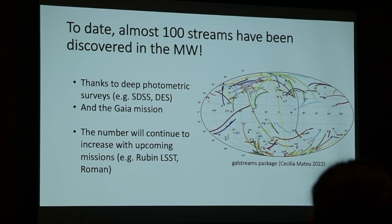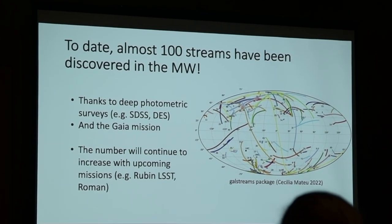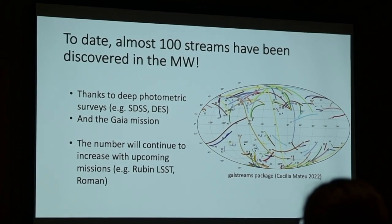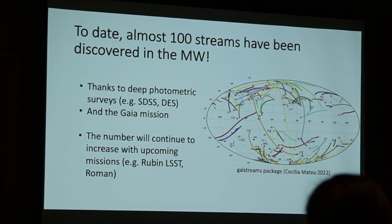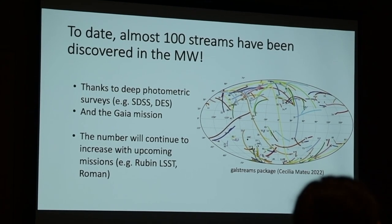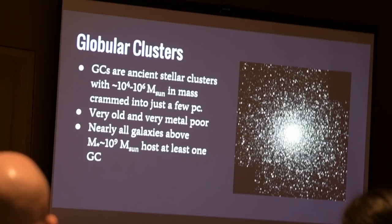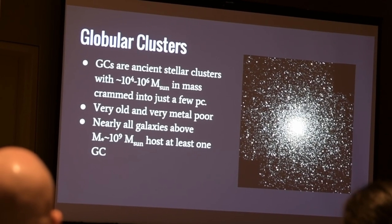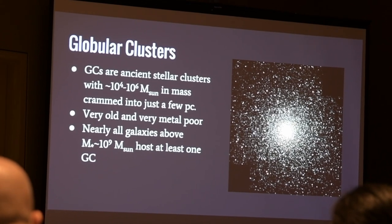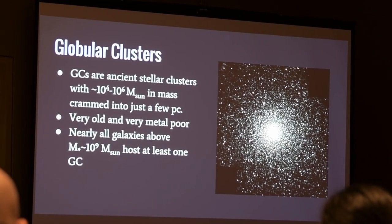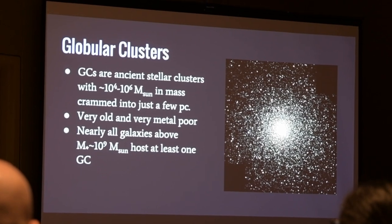Up until now, there are roughly 100 tidal streams that have been discovered in the Milky Way, as you can see in the plot on the right, which shows all the tidal streams from the galstream package by Cecilia. Globular clusters are very ancient, very dense stellar clusters. They have around 2 times 10 to the 5 solar masses, with stars crammed into half-light radii of just a few parsecs.